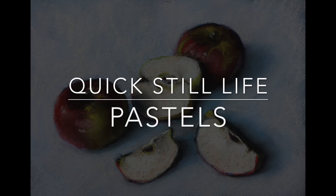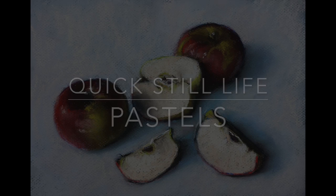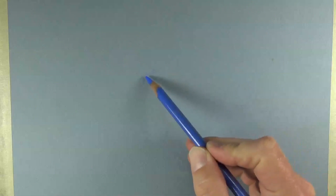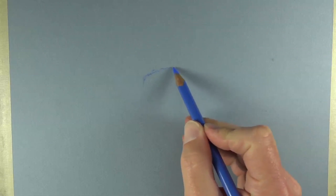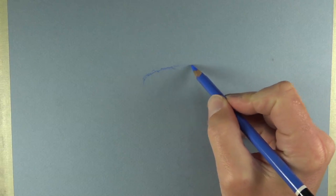In this lesson, we'll take a look at creating a quick still life with pastels. We'll start on Canson-Mittance paper, and I'm using a cooler gray toned surface.